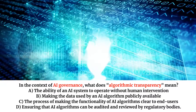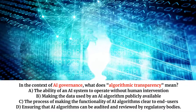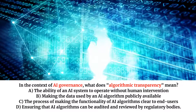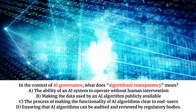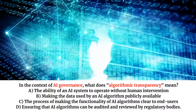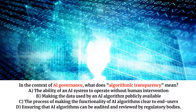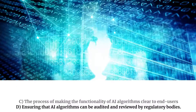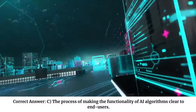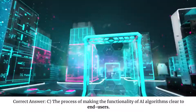In the context of AI governance, what does algorithmic transparency mean? A. The ability of an AI system to operate without human intervention. B. Making the data used by an AI algorithm publicly available. C. The process of making the functionality of AI algorithms clear to end users. D. Ensuring that AI algorithms can be audited and reviewed by regulatory bodies. Correct answer: C. The process of making the functionality of AI algorithms clear to end users.